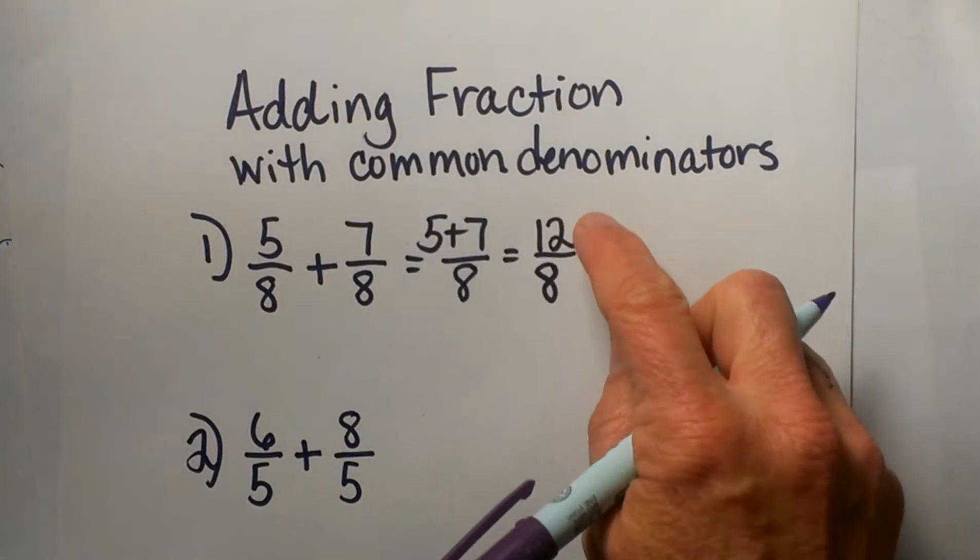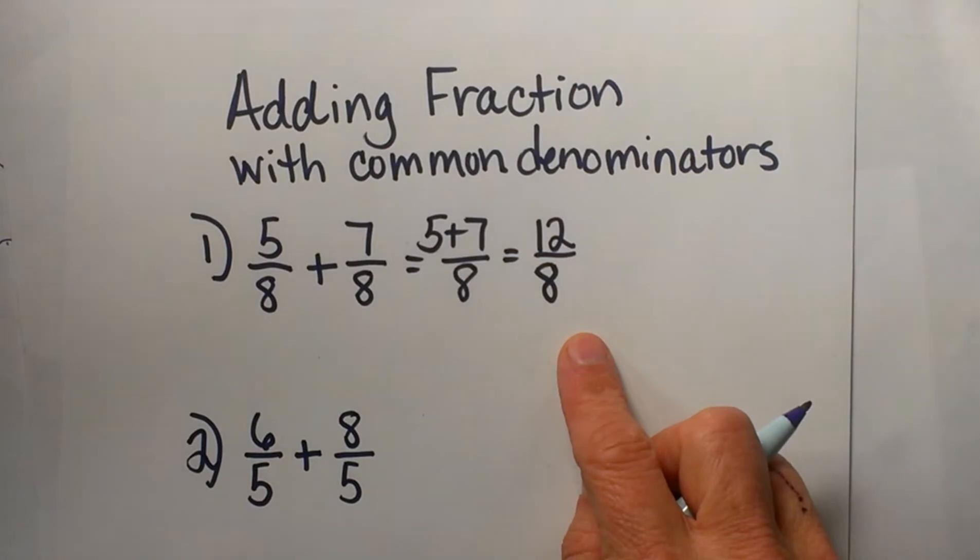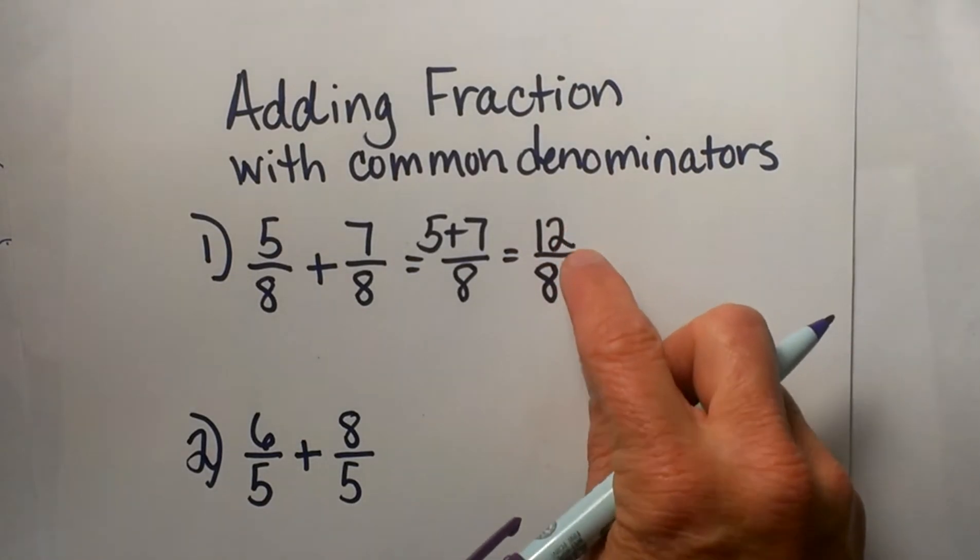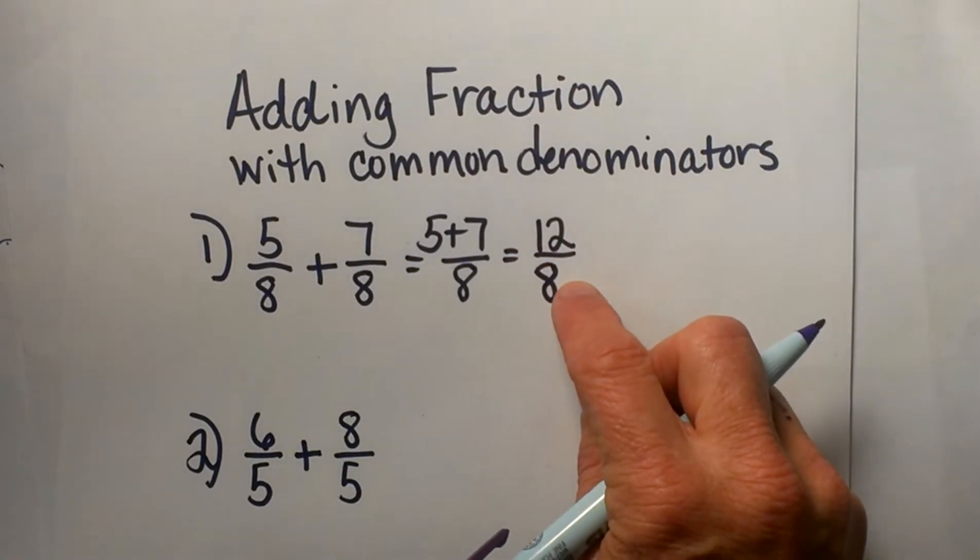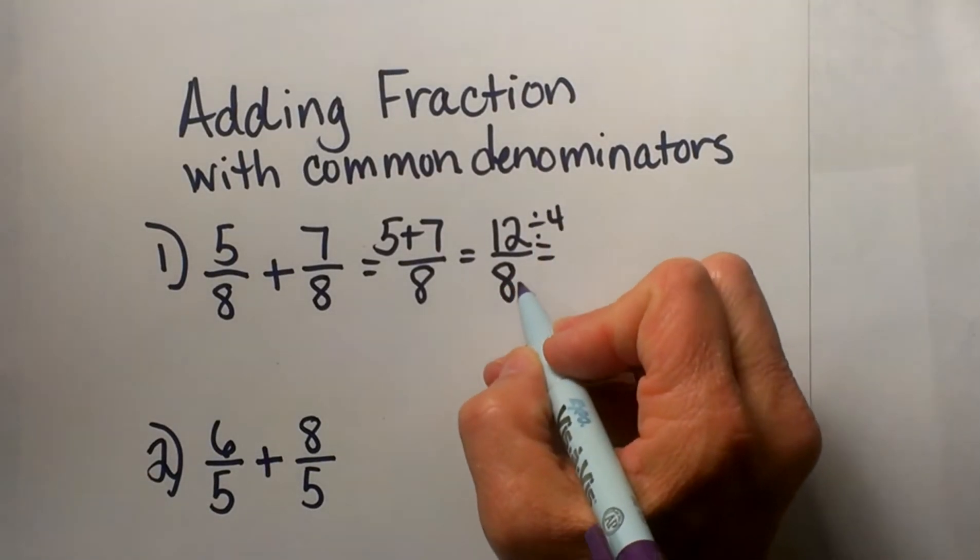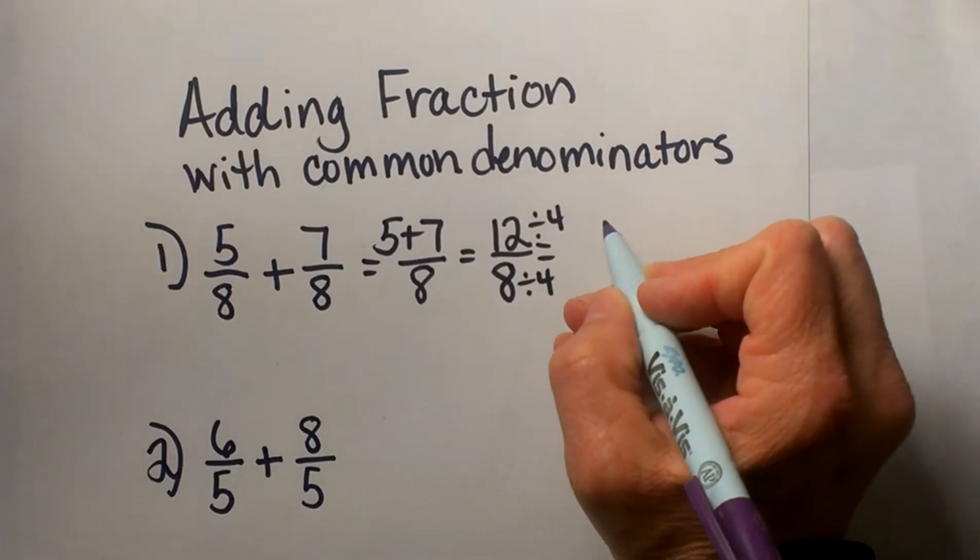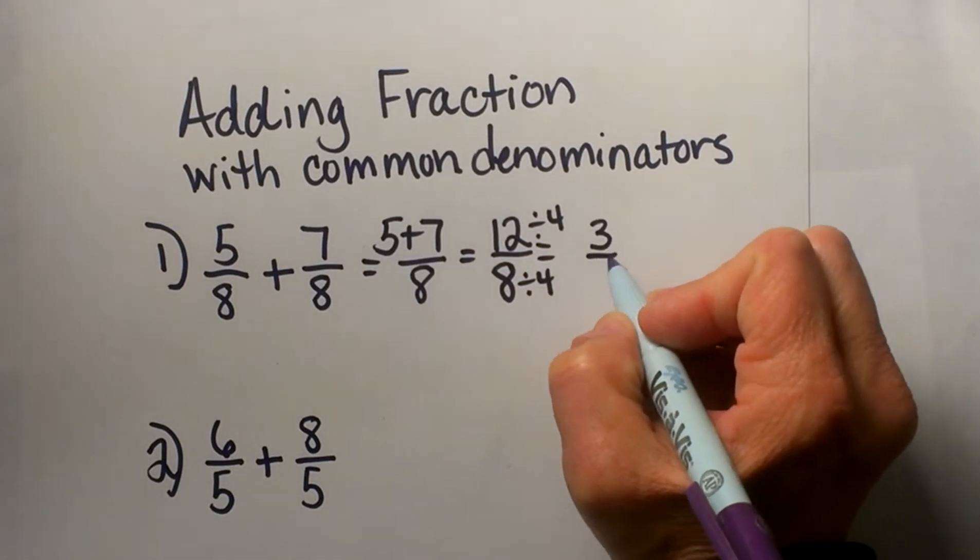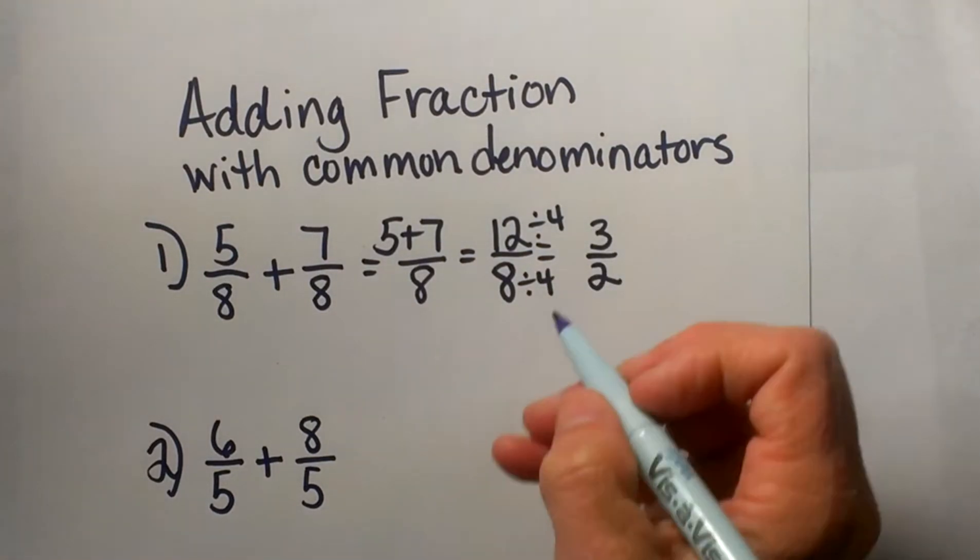Now as you can see, 12/8 can be reduced. First we know that 12 and 8 both have a common factor of 4, so I can actually divide the 8 and the 12 by 4 and that gives me 3/2. So your answer is 3/2.